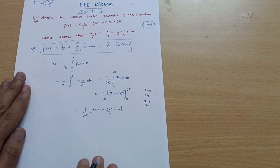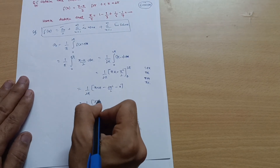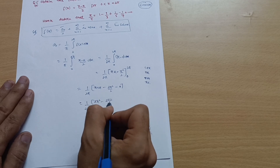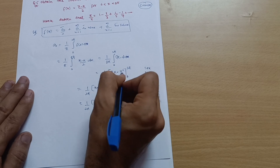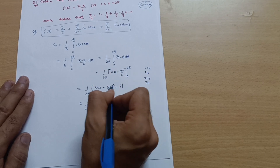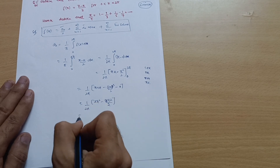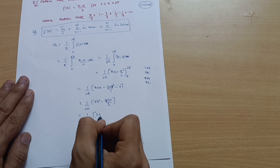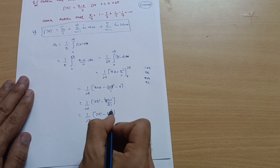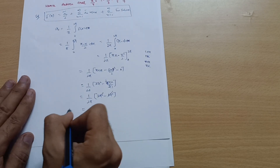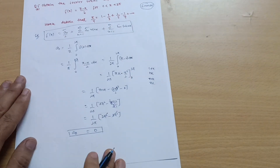We get (1/2π)(2π² − 2π²) = (1/2π)(0) = 0. Therefore a₀ = 0. Now we have to calculate the aₙ value.